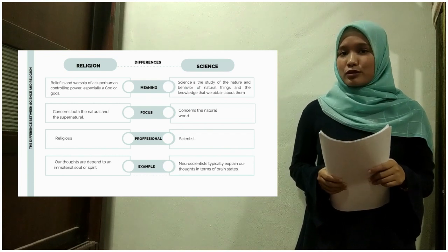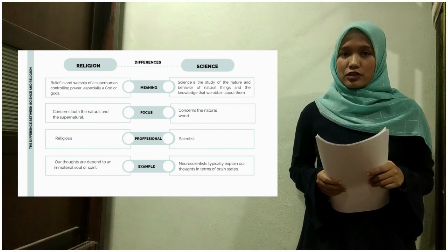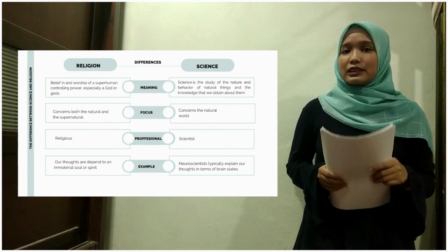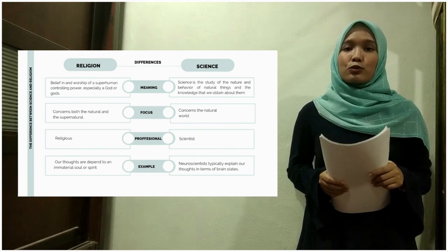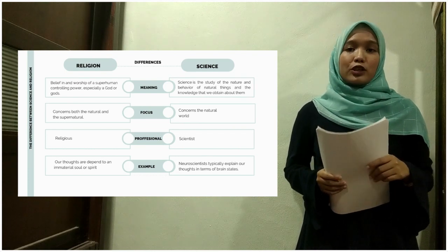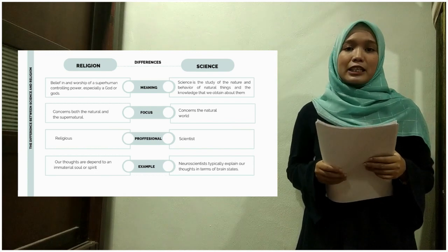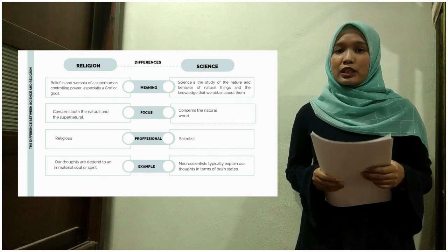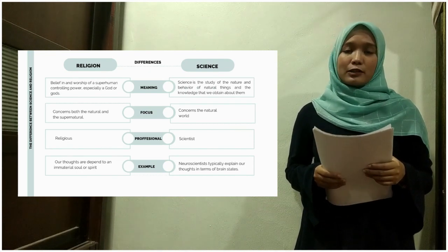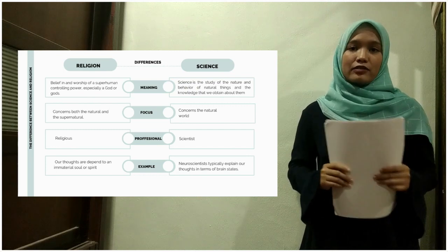However, science is the study of the nature and behavior of natural things and the knowledge that we obtain about them. In religion, it is concerned with both the natural and the supernatural, while science focuses on the natural world. People that are professional in religion are known as religious, while in science they are known as scientists. In religion, our thoughts are attributed to an immaterial soul or spirit, while according to science, neuroscientists explain that our thought is a product of brain states.